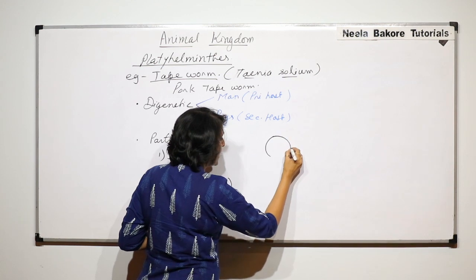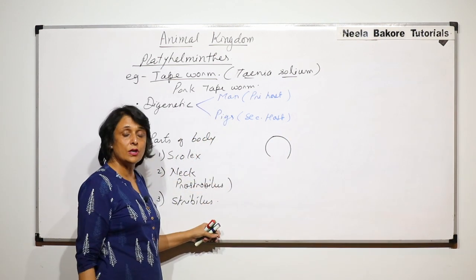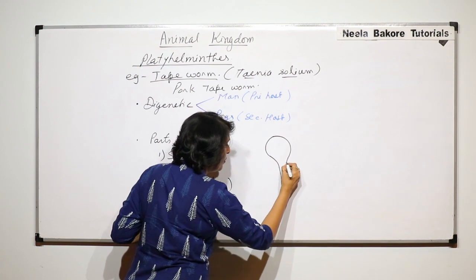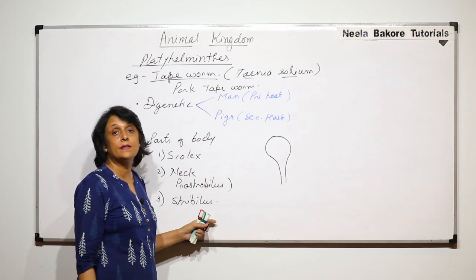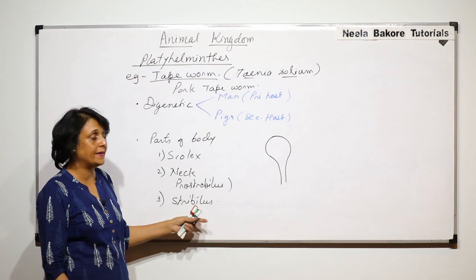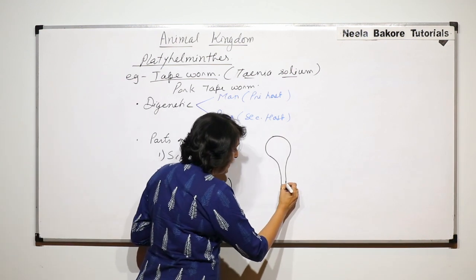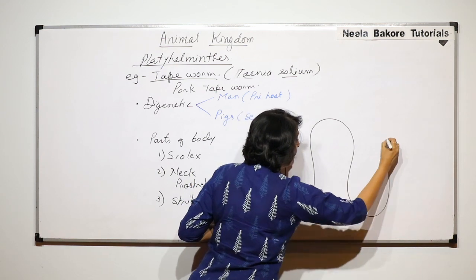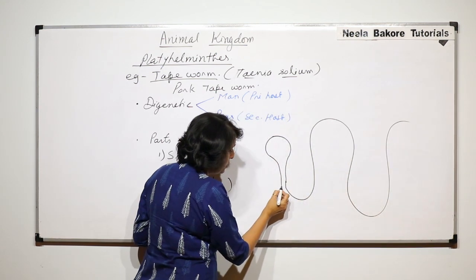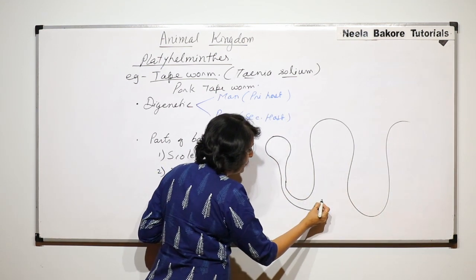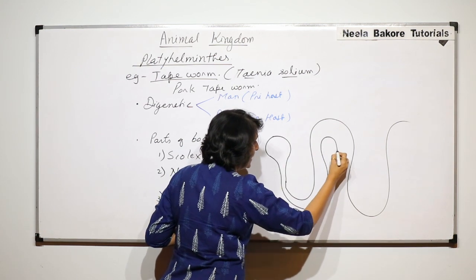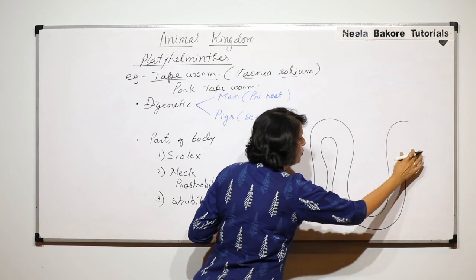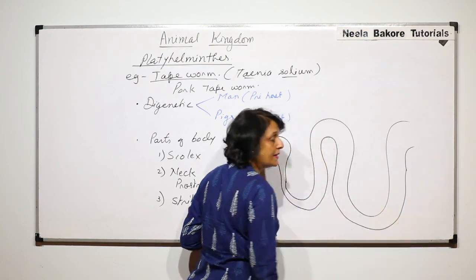The scolex is a bulb-like structure or head-like structure. And then there is a narrow body part and we have to remember that this is dorsal-ventrally flattened. This part then extends into a long ribbon-like body and as we go towards the end of the body we find that it becomes little more wider, and towards the end we find the widest segments.